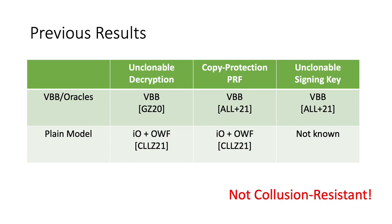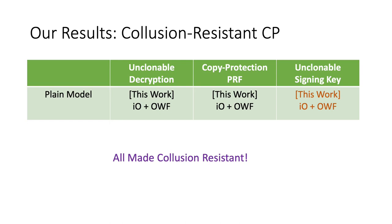Looking at previous results, all of them are not collusion resistant — they only show one-to-two security, which is quite restricted compared to what we need in the real world. Our major contribution in this work is that we not only give a construction for unclonable signing key — essentially copy protecting the signing algorithm in a signature scheme using IO and one-way functions — we also make all these previous constructions collusion resistant. For this talk, I will focus on how to make them collusion resistant.